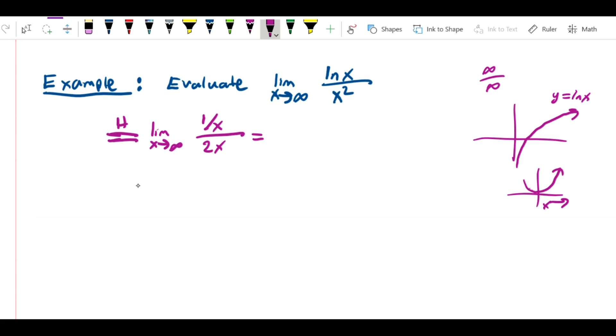You can have 0 over 0, you can have infinity over infinity. 0 over infinity is not a L'Hopital's rule form. So we're just going to simplify this. This is the limit as x approaches infinity of 1 over 2x squared. This is 1 over something growing to infinity, and this is just 0.